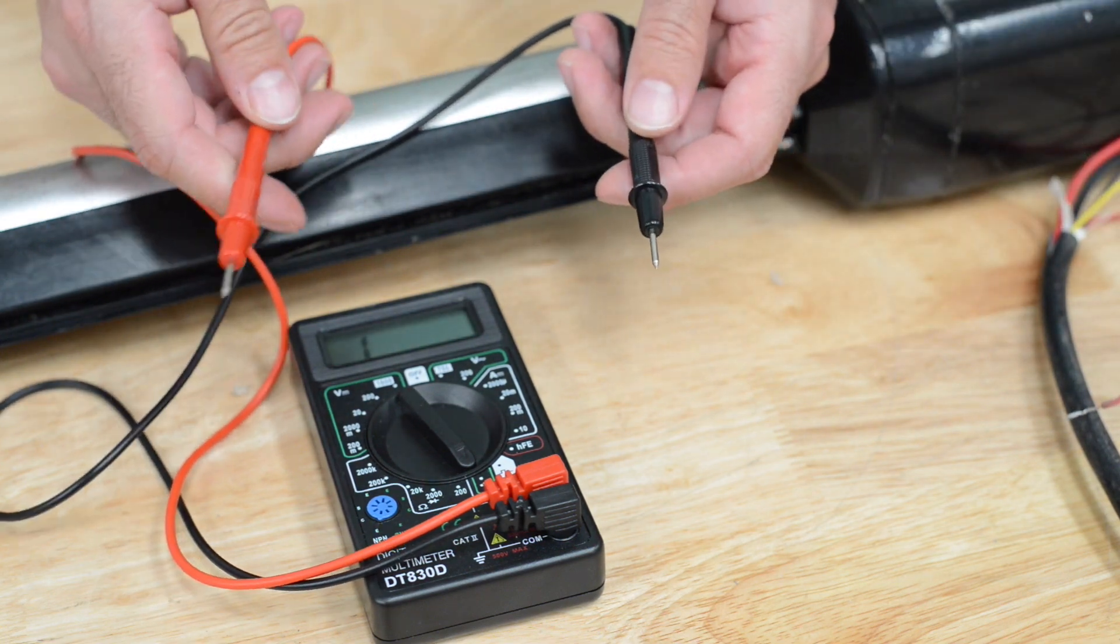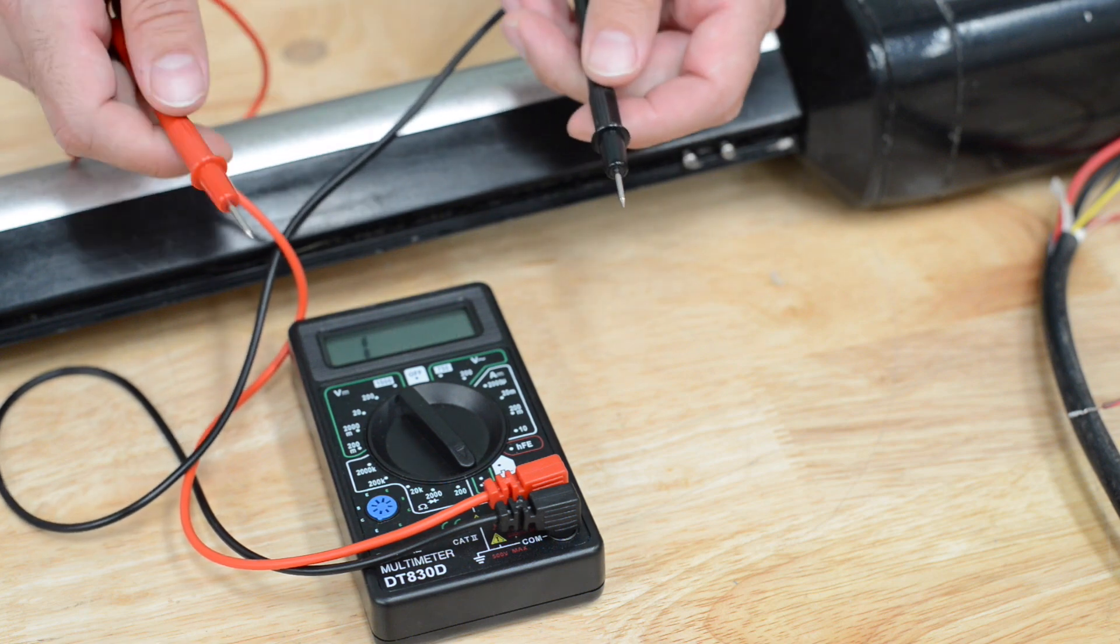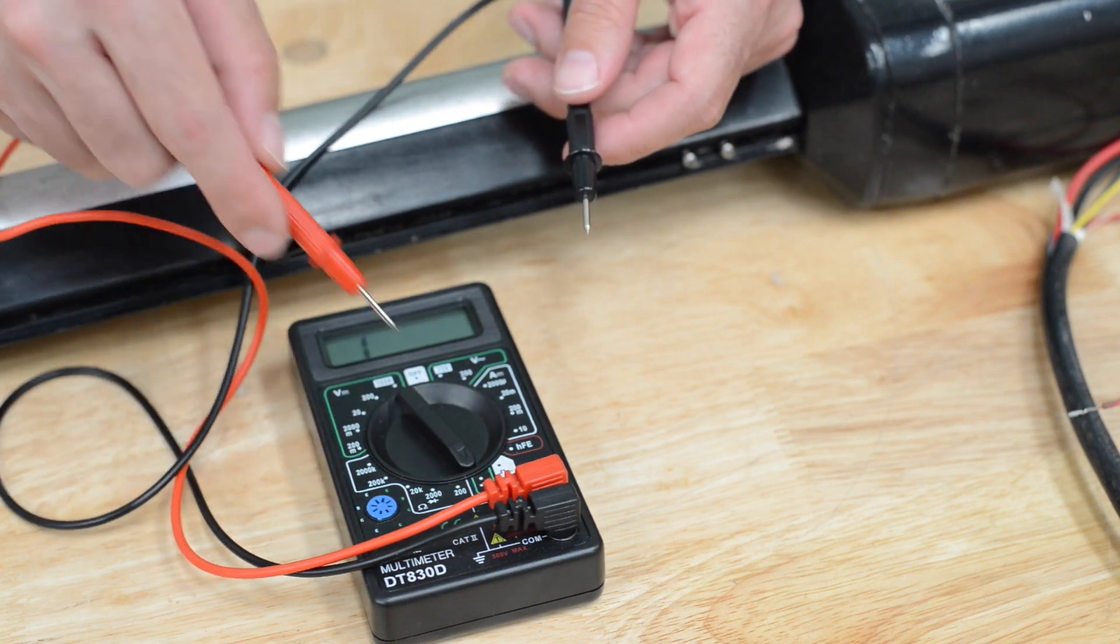What will happen is when you take the two leads in the multimeter and touch them together, you will get a sound. This indicates there's continuity flowing out of this and into that.